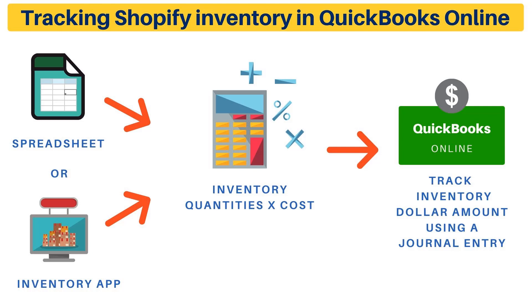You'll track your inventory in a spreadsheet or by using an inventory management app. You'll need to track quantity and cost to get a dollar amount of your inventory. You'll use the total amount of your inventory at the end of the month and update that amount in QuickBooks Online — by doing so, you bypass having to track individual items, costs, and quantities in QuickBooks. You would use a journal entry in QuickBooks to reflect the correct inventory balance, and I'll have a video in the future showing you specifically how to do that.